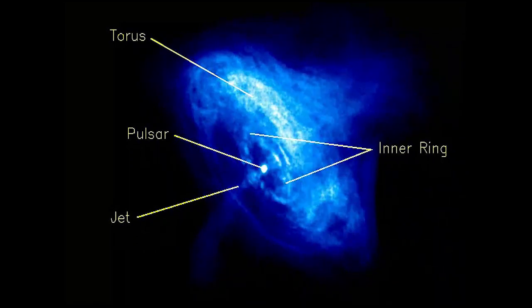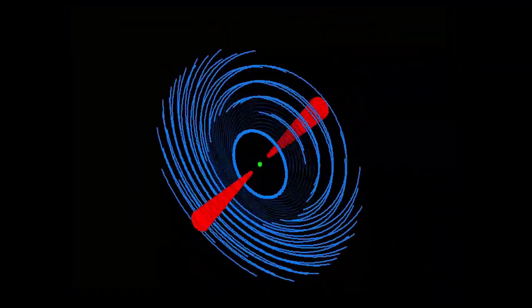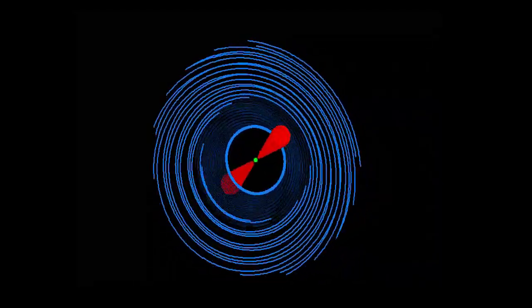Shock waves ripple out from the central source. We see a ring of gas surrounding the neutron star, glowing with X-ray radiation.